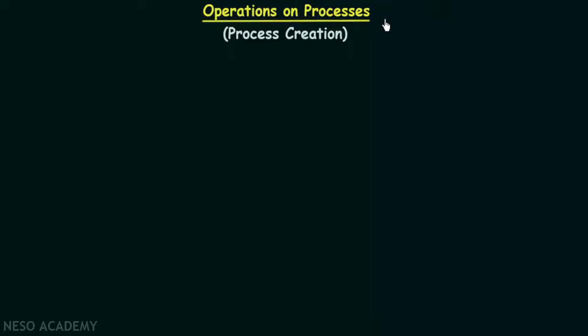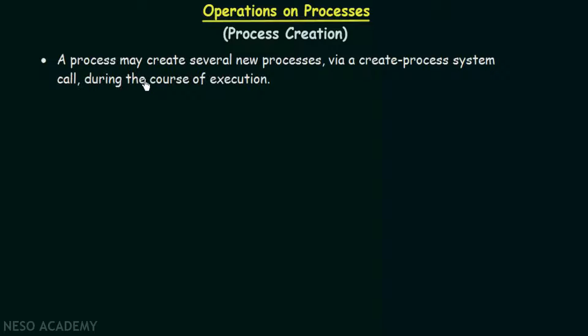In this lecture we will be studying about operations on processes, particularly process creation. A process may create several new processes via a create process system call during the course of execution. When studying processes, we've seen that several processes run in the system, and these are not created individually by the user. A single process can create several new sub-processes under it using the create process system call.